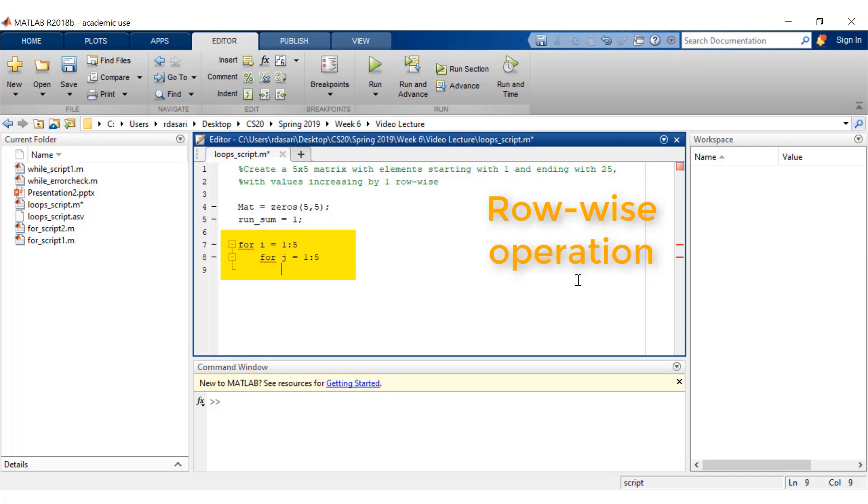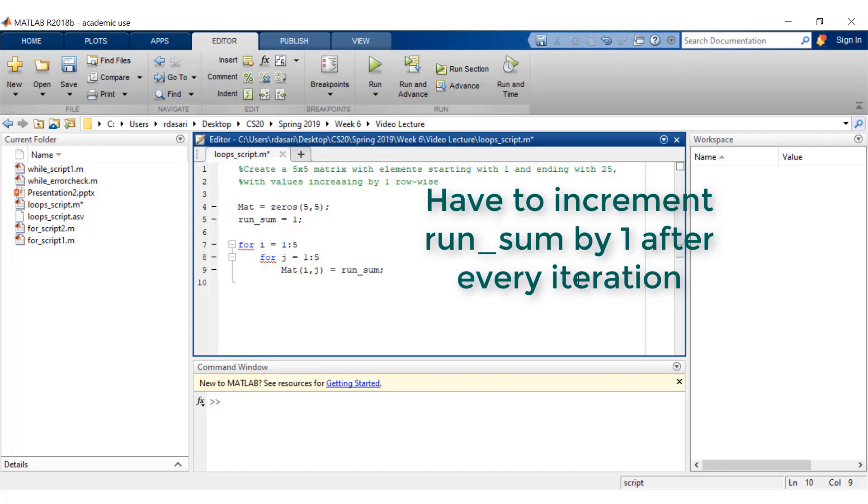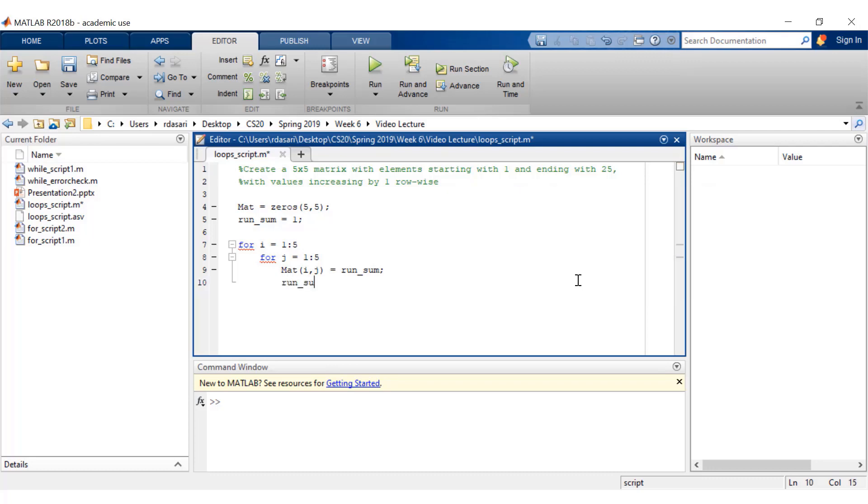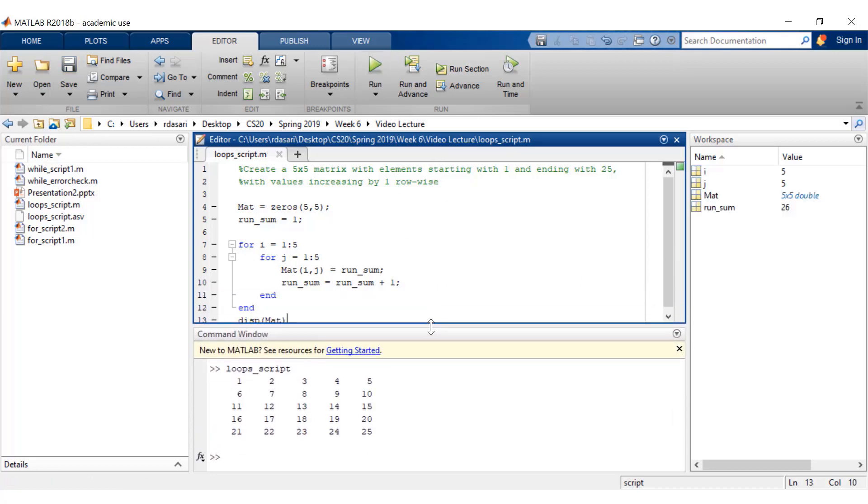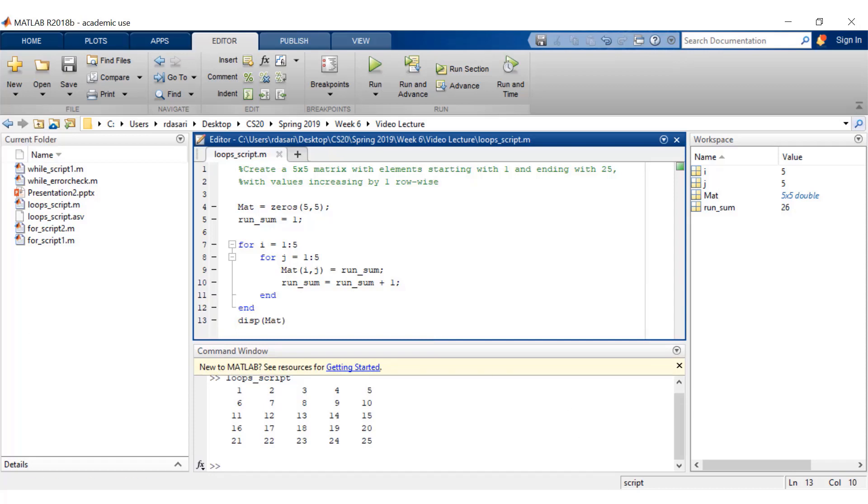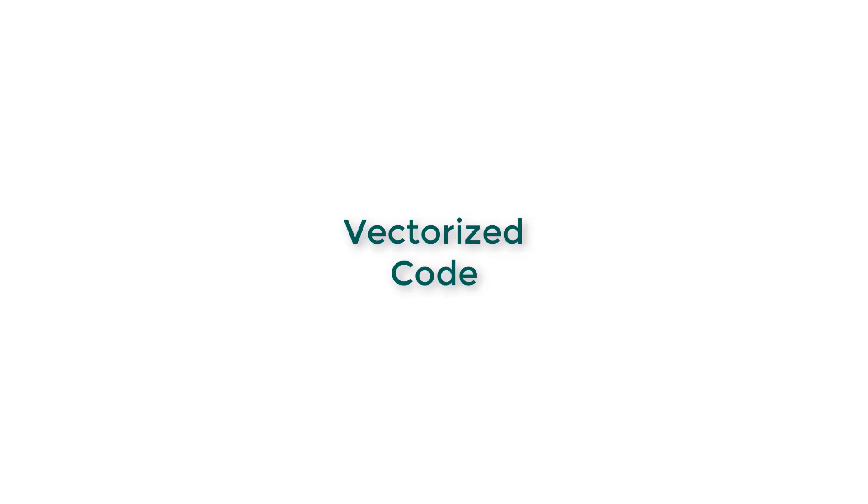Then we'll say mat of i comma j equals run_sum, so that makes sure mat of 1 comma 1 has the value one. Then you increment this run_sum variable by a value of one each time it enters this loop. I'm closing those loops with the end statements and finally displaying the result. Let me run this and see if we get the same value. There you go. But is this the only way to create this? The answer is no.